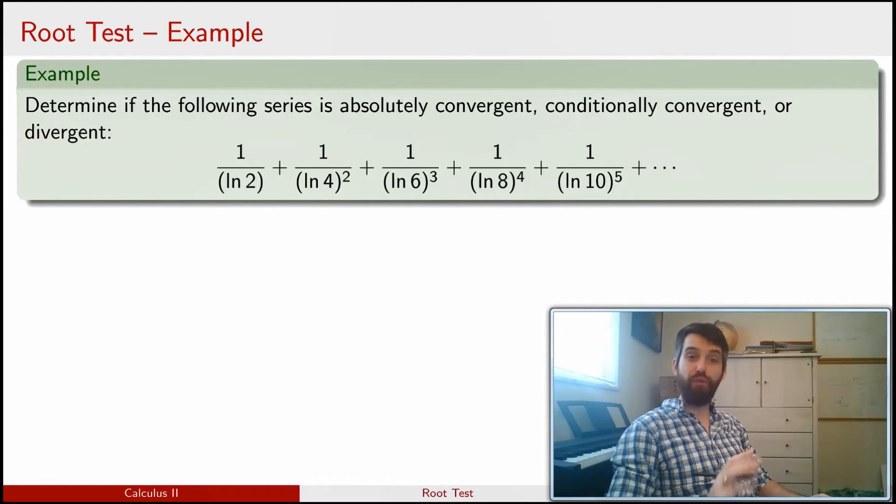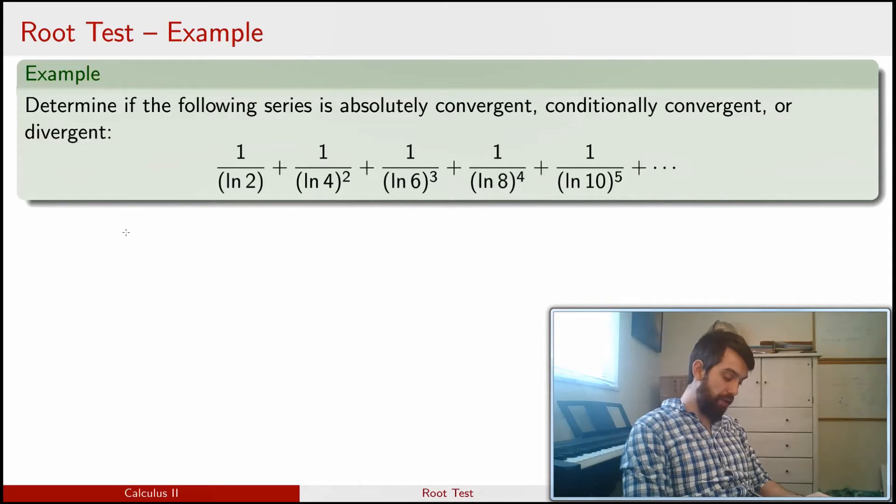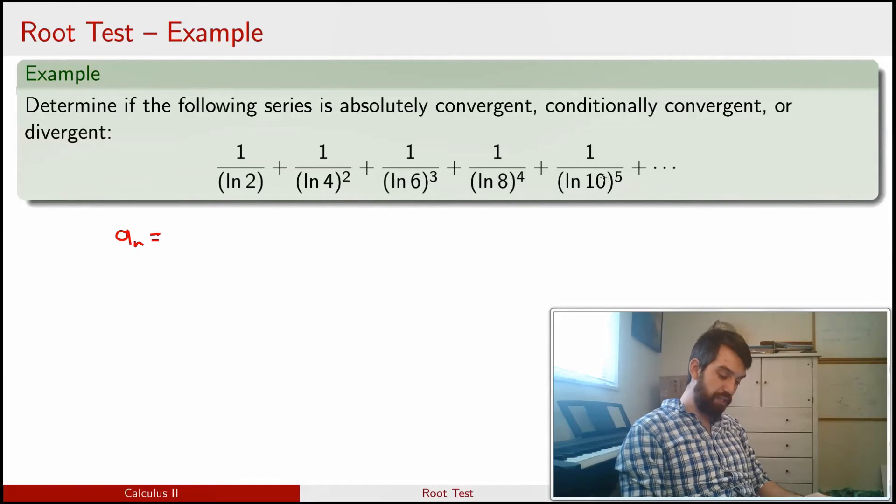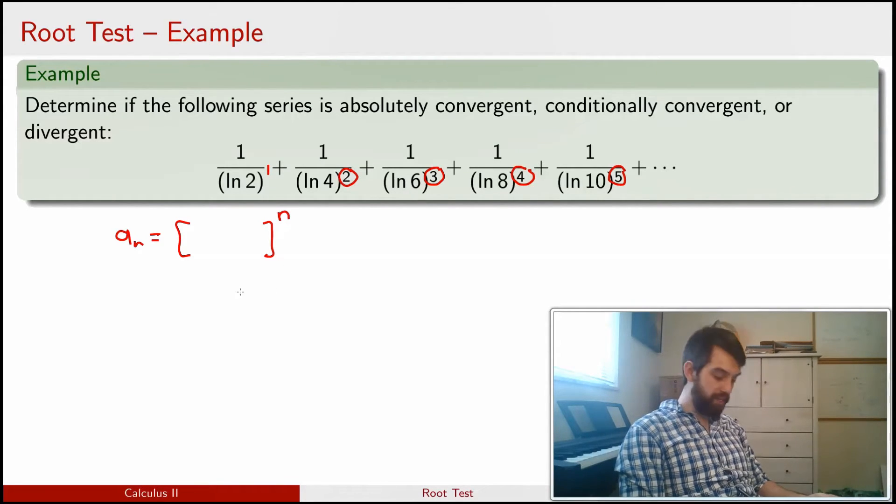So let's do that before we even think about applying any test. First, I'm going to claim that my a_n, I think the first thing I notice is that I have a series of powers here. This is like 1 over the natural log to the power of 1, and then squared, and then cubed, and to the 4th, and to the 5th, and so on. So this is like something to the power of n.